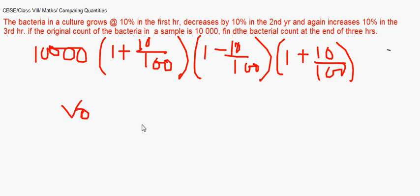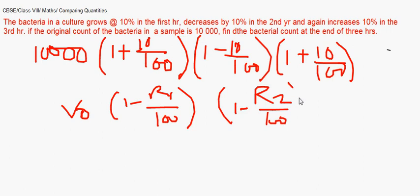V₀ is the original value of the machinery, times (1 - R₁/100) for the first year's decrease, times (1 - R₂/100) for the second year, and so on. Similar to the bacteria question or previous question, the difference is it's always a reduction because depreciation means reducing the value of an asset.